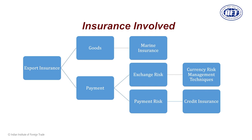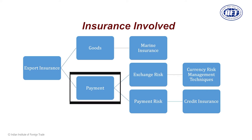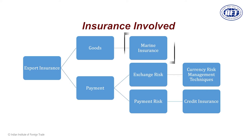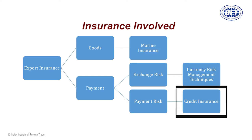The most important thing when we talk about export credit risk is the insurance involved. Export insurance is a broad area — it covers both coverage of goods as well as risk related to payment. Risk related to goods is mainly covered by marine insurance. When we talk about risk related to payment, there are two types: one related to exchange and the other related to realization of payment. Exchange risk is mainly covered by various techniques of currency risk management, whereas risk related to non-realization of payment is where credit insurance comes into the picture.